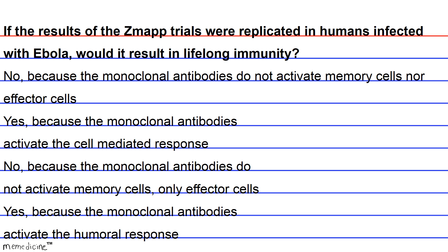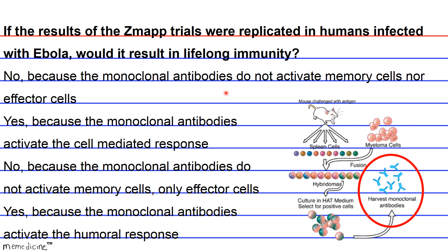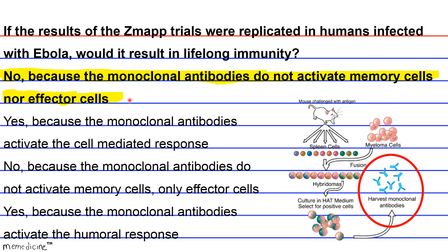Immunological memory basically depends on challenging the lymphocytes with antigens, regardless of humoral or cell-mediated responses. Antibodies by themselves do not provide lifelong immunity. The monoclonal antibodies were produced by another organism and then given to the infected organism. Hence, they will not provide lifelong immunity because they do not activate memory cells nor effector cells. The answer is A.